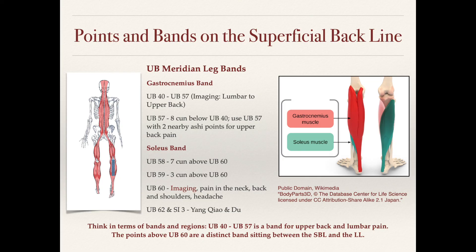At UB58, something interesting happens: the urinary bladder meridian shifts laterally. UB58 is located 7 sun above UB60, UB59 is 3 sun above UB60, and UB60 sits between the lateral malleolus and the Achilles tendon. Through this area we can start to access the soleus muscle, which is also part of the superficial backline but lies underneath the gastrocnemius. I refer to this as the soleus band, covering the UB58 to UB60 area.